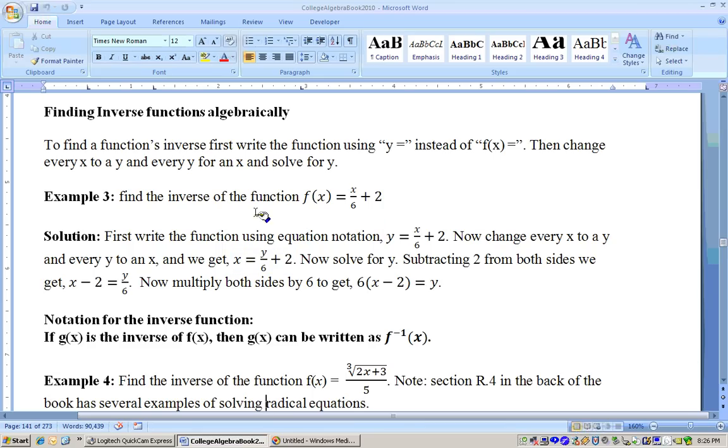Now, let's say you couldn't get that off the top, or it might be a tougher one, like down here with example 4. Then what you do is, first of all, write this with the y equals rather than f(x) equals. So we say y = x/6 + 2. Now change every x to a y and every y to an x. So we just switch the x and y.